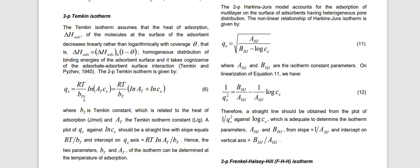bt is a Temkin constant having units of joules per mole. at is also a Temkin isotherm constant having units of liters per gram. ce is the concentration of the adsorbate solution at the equilibrium point. The equation is: qe = (RT/bt) × ln(at) + (RT/bt) × ln(ce).